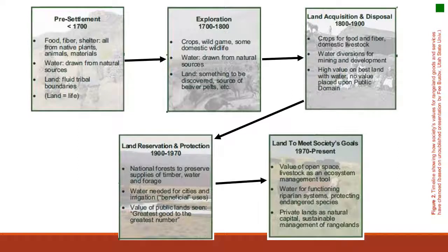Today a lot of our land management practices are based around multiple use and how we're going to meet society's needs and goals. This includes things like preserving open space — which wasn't an issue in the 1700s and 1800s — protecting endangered species, and making sure we're creating sustainable rangelands for future use.